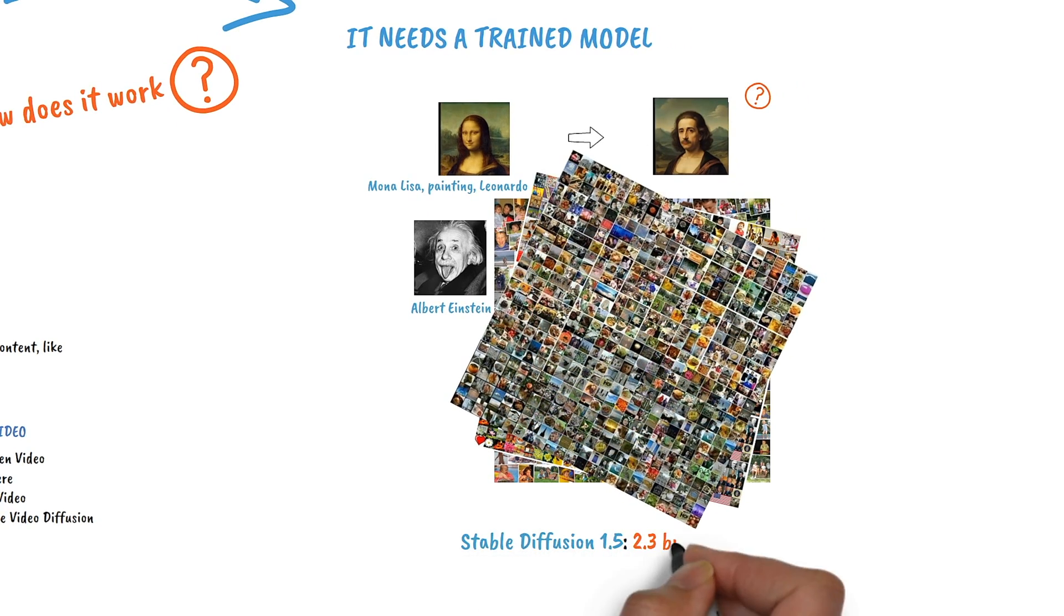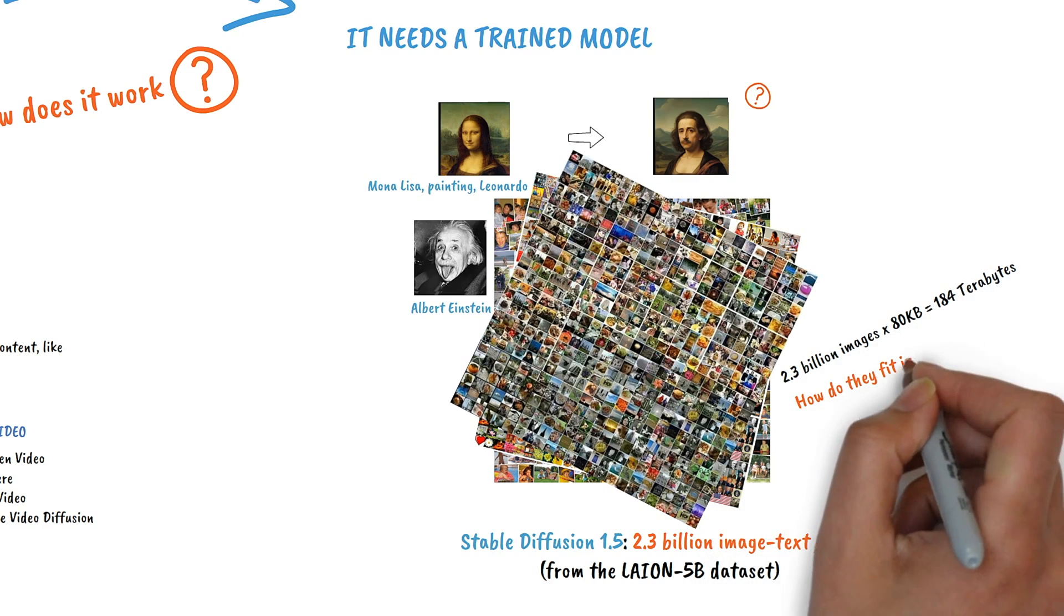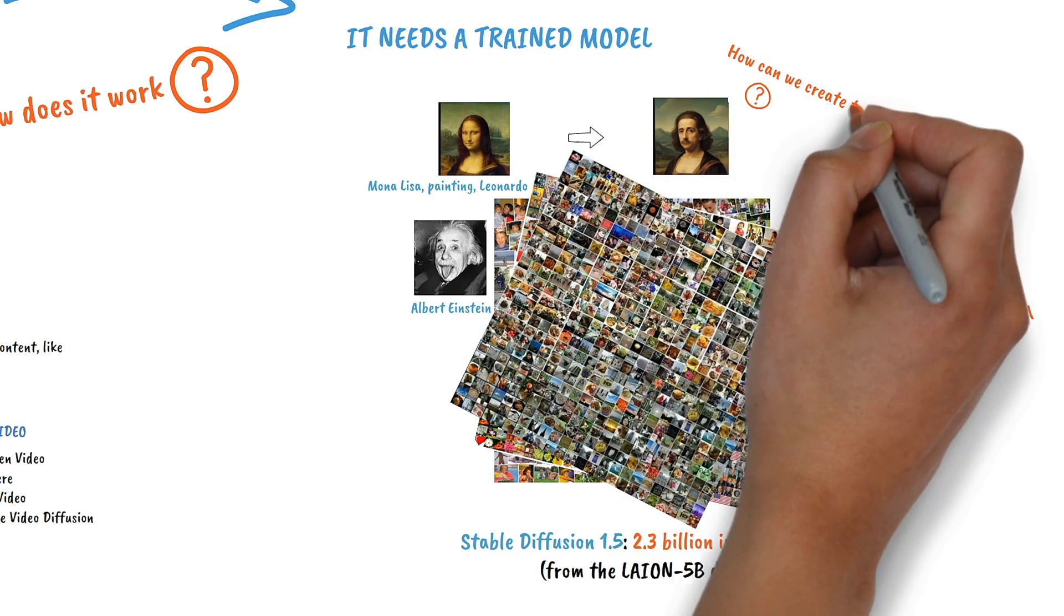In fact, Stable Diffusion 1.5 contains more than 2.3 billion image text pairs. But how can they fit into a model with a size of just 2.13 gigabytes? And how can we create totally new images?